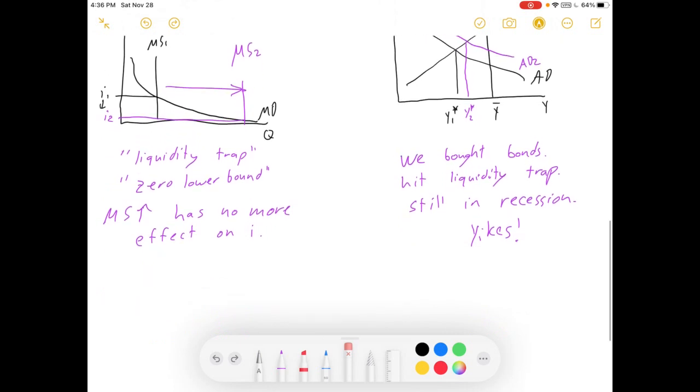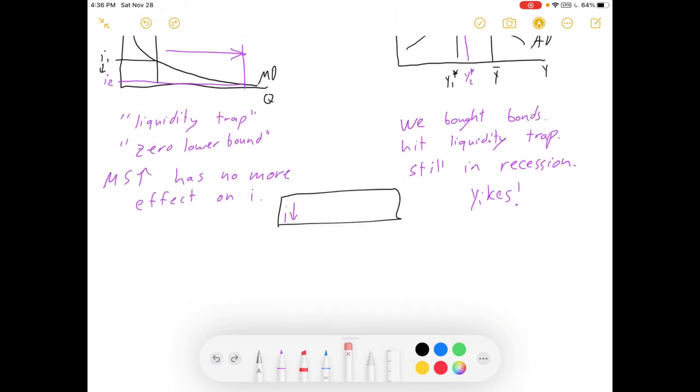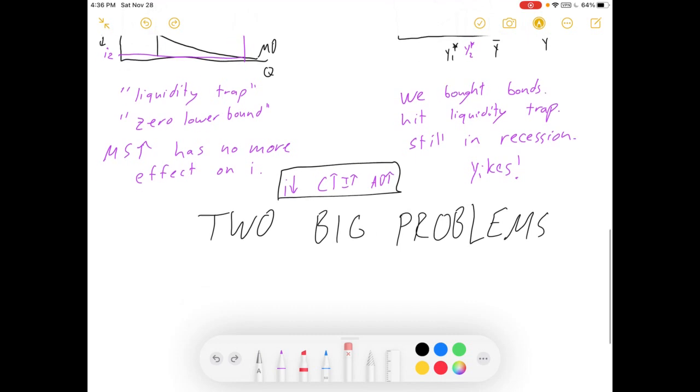Well, that's when the Fed got a little bit more creative. They decided to get outside of this general formula of lowering interest rates to boost consumption, investment, and aggregate demand, because they were running into two big problems.